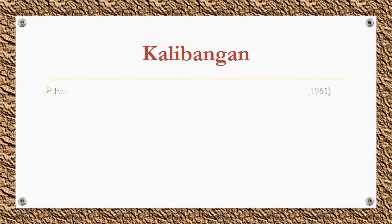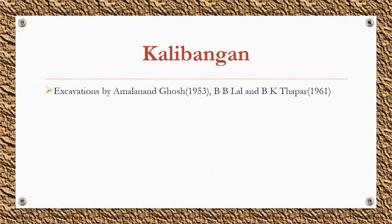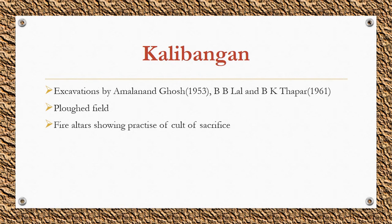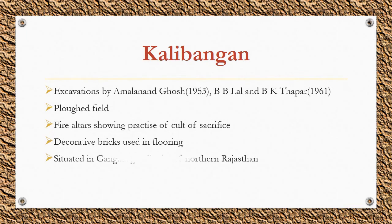Kalibangan was excavated by Amalnand Ghosh in 1953 and by B.B. Lal and B.K. Thapar in 1961. A ploughed field was observed here. Fire altars showing the practice of a cult of sacrifice were also observed. Decorative bricks were used in the flooring only at this particular site. It is situated in Ganganagar district of northern Rajasthan on the banks of the now-dry course of the Ghaggar river.